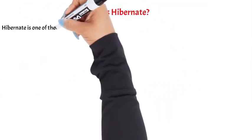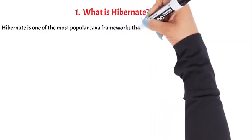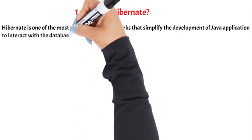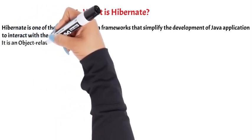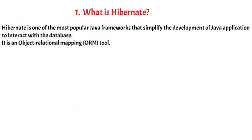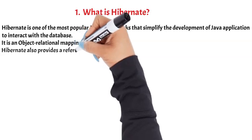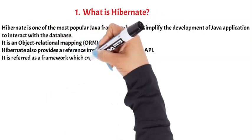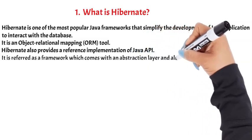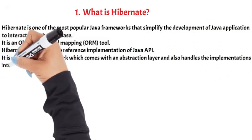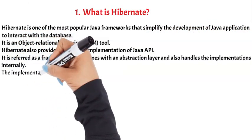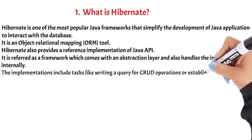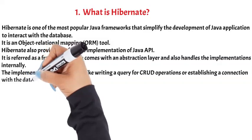Hibernate is one of the most popular Java frameworks that simplify the development of Java applications to interact with the database. It is an object-relational mapping (ORM) tool. Hibernate also provides a reference implementation of Java API. It is referred to as a framework which comes with an abstraction layer and also handles the implementations internally. The implementations include tasks like writing a query for CRUD operations or establishing a connection with the databases, etc.